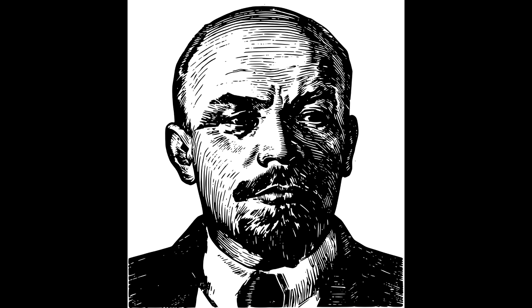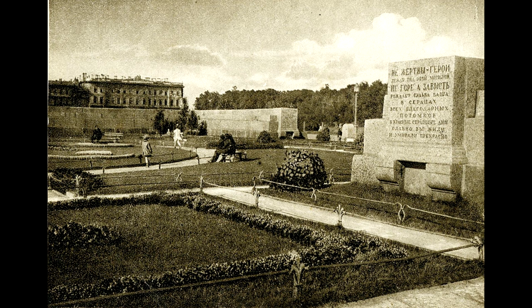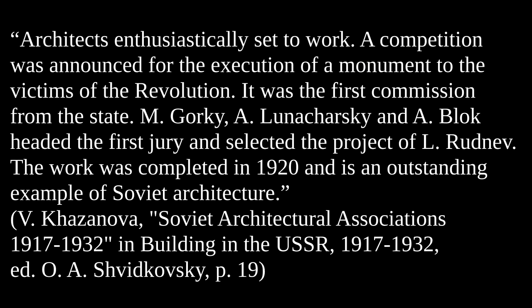Many of the early monuments were temporary decorations or temporary monuments, which were constructed hurriedly to spread the revolutionary message. Some high-quality works were created, such as the statue of the Bolshevik scientist Timiryazev by Merkurov, and Lev Rudnev's Monument to the Martyrs of the Revolution in the Field of Mars. A modern-day writer, Casanova, writes: "Architects enthusiastically set to work. A competition was announced for the execution of a monument to the victims of the revolution — it was the first commission from the state. M. Gorky, A. Lunacharsky, and A. Blok — a communist writer, education commissar, and a communist poet — headed the first jury and selected the project of L. Rudnev. The work was completed in 1920 and is an outstanding example of Soviet architecture."